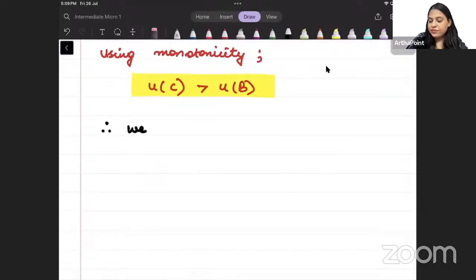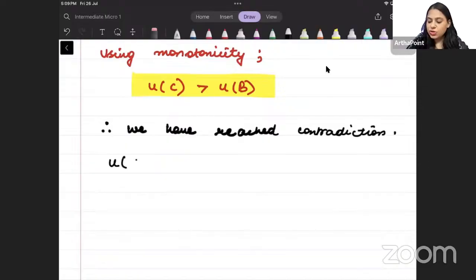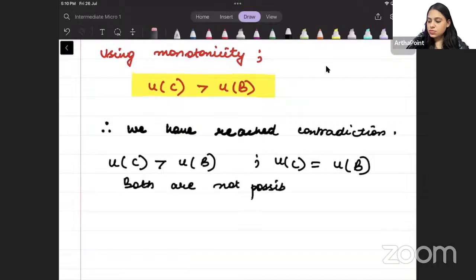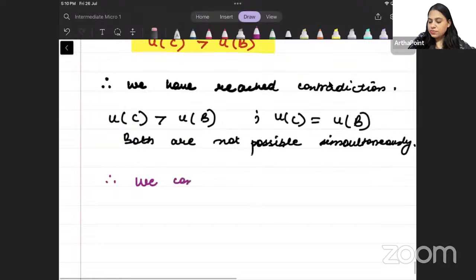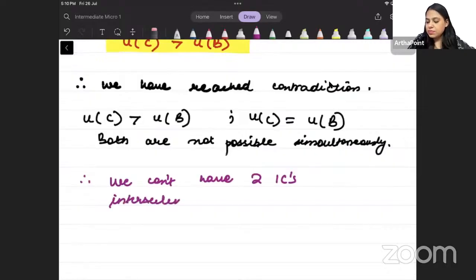Therefore, we have reached a contradiction. One is telling me that utility of C is more than utility of B. The other is telling me utility from C should be equal to utility from B. Both are not possible simultaneously. I cannot satisfy both. Either it will be more or it will be equal. So we have reached a contradiction. Therefore, we cannot have two ICs intersecting each other.